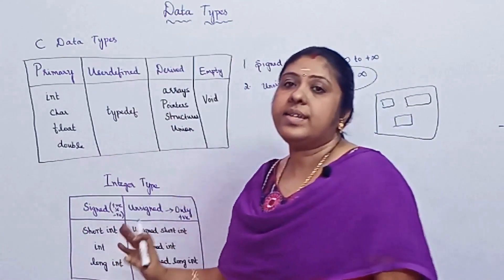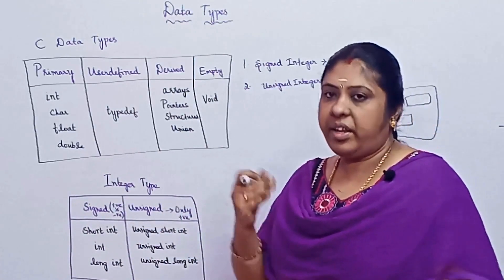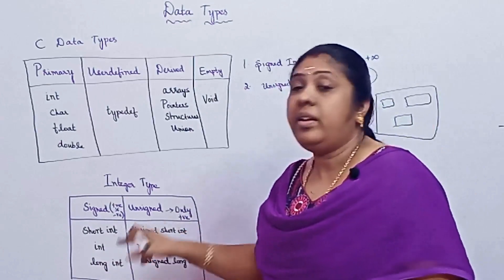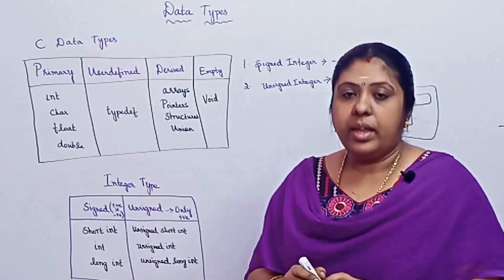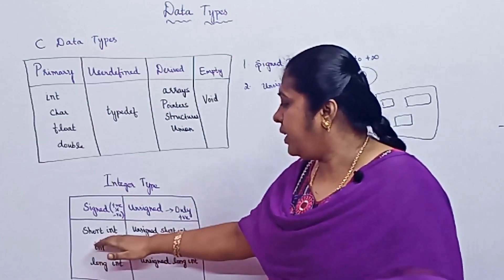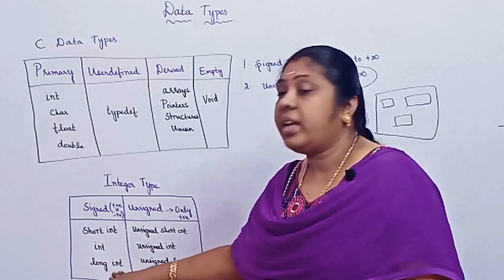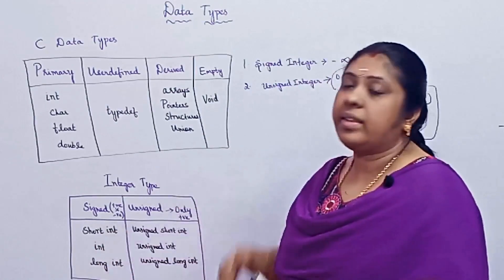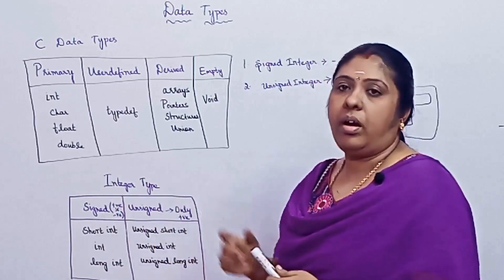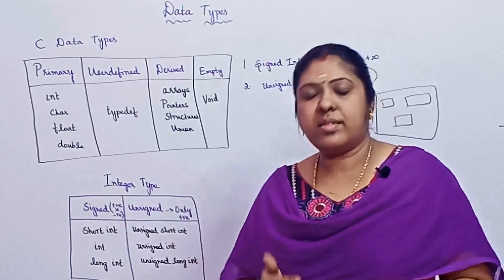In the integer data type we have three different sizes: short int, int, and long int. Short int holds smaller numbers, int holds a standard size, and long int is larger than the regular integer. We will now discuss how much memory each type needs and how the ranges are calculated.